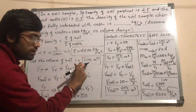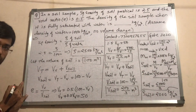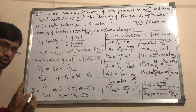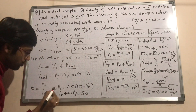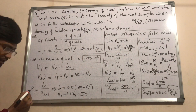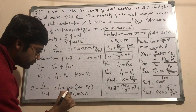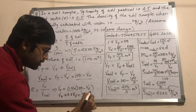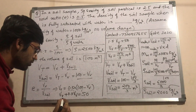Now E is your void ratio. The formula for void ratio is: void ratio is equal to volume of void upon total volume of soil. So volume of void equals void ratio multiplied by volume of soil. With void ratio 0.5, volume of void equals 0.5 multiplied by volume of soil, which is (100 minus Vv).